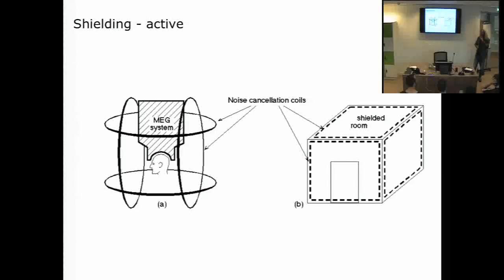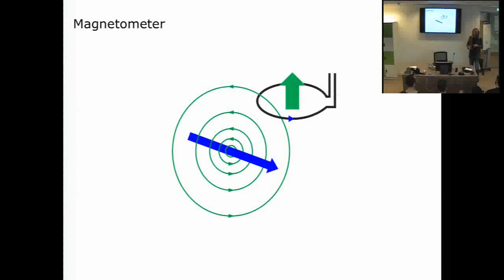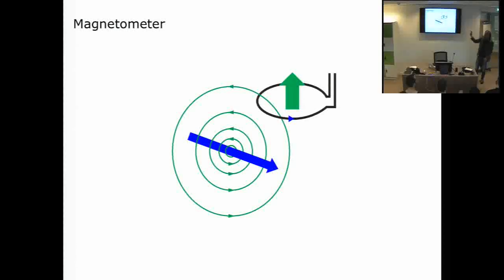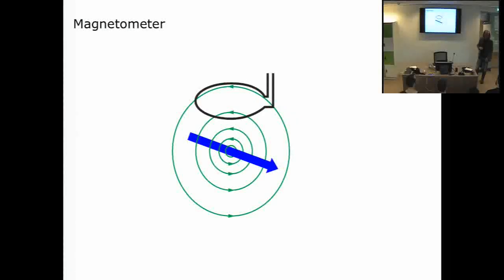An equally important component for noise in an MEG system is sensor design. A magnetometer measures the magnetic field itself. If a current runs out of the screen, there's a magnetic field around it — placing the sensor directly on top of the source gives no signal, because the field lines go in and out within the coil.